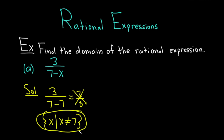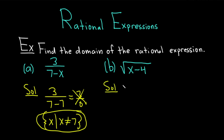Let's do another one. Part B, we have the square root of x minus 4. We're looking for the set of all x's that we can plug into the expression that makes sense. In this case, we have a square root, so you can't take the square root of a negative number. So whatever's inside the square root — in this case, that's x minus 4 — has to be greater than or equal to 0.